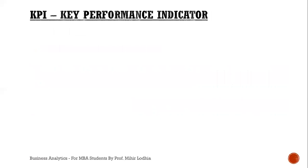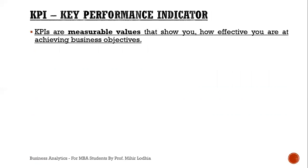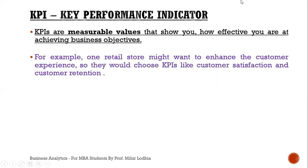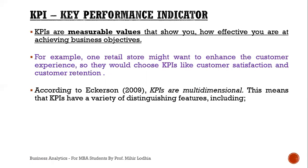Next, key performance indicators, also known as KPIs, are measurable values that show how effective you are at achieving business objectives. For example, a retail store wanting to enhance the customer experience might choose KPIs like customer satisfaction and customer retention. According to one definition, KPIs are multidimensional, meaning a KPI has a variety of different factors.